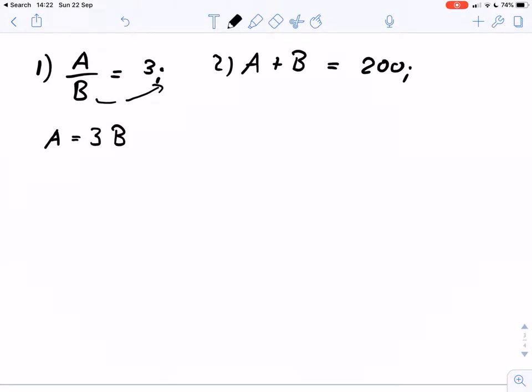That follows from this equation. And what we can do now is we can take this and put the A into this equation. So instead of A, we can write 3B plus B equals 200.